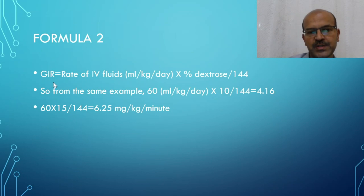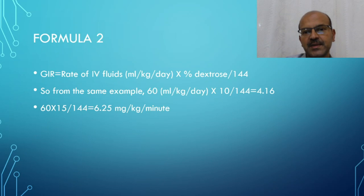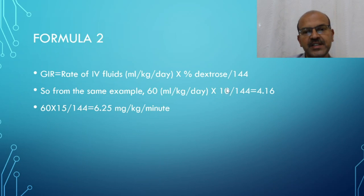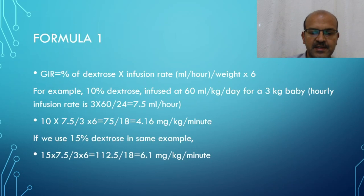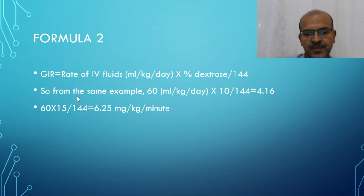The second formula uses ml/kg/day directly, so no conversion to ml/hour is needed. Once you know the ml/kg/day and dextrose strength, simply divide by 144. The 144 represents the number of minutes in a day (60 × 24 = 1440), with the trailing zero cancelled by the dextrose conversion. So 60 ml/kg/day with 10% dextrose ÷ 144 = 4.16 mg/kg/min — the same answer as before. With 15% dextrose: 6.25 mg/kg/min.